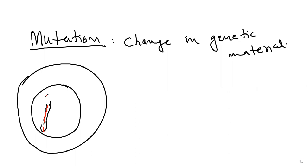Mutation occurs in all living organisms whose genetic material is DNA. But remember, some viruses have RNA as their genetic material. For example, the coronavirus — its genetic material is RNA, not DNA. Any change in genetic material, whether DNA or RNA, is called mutation.